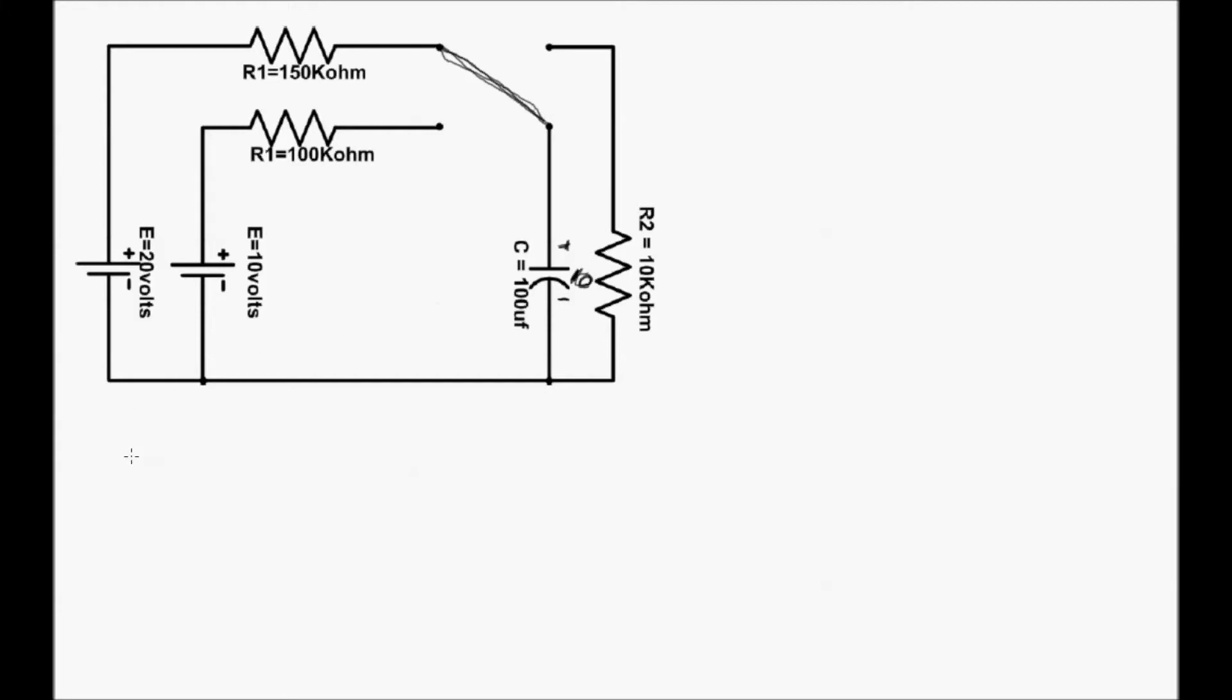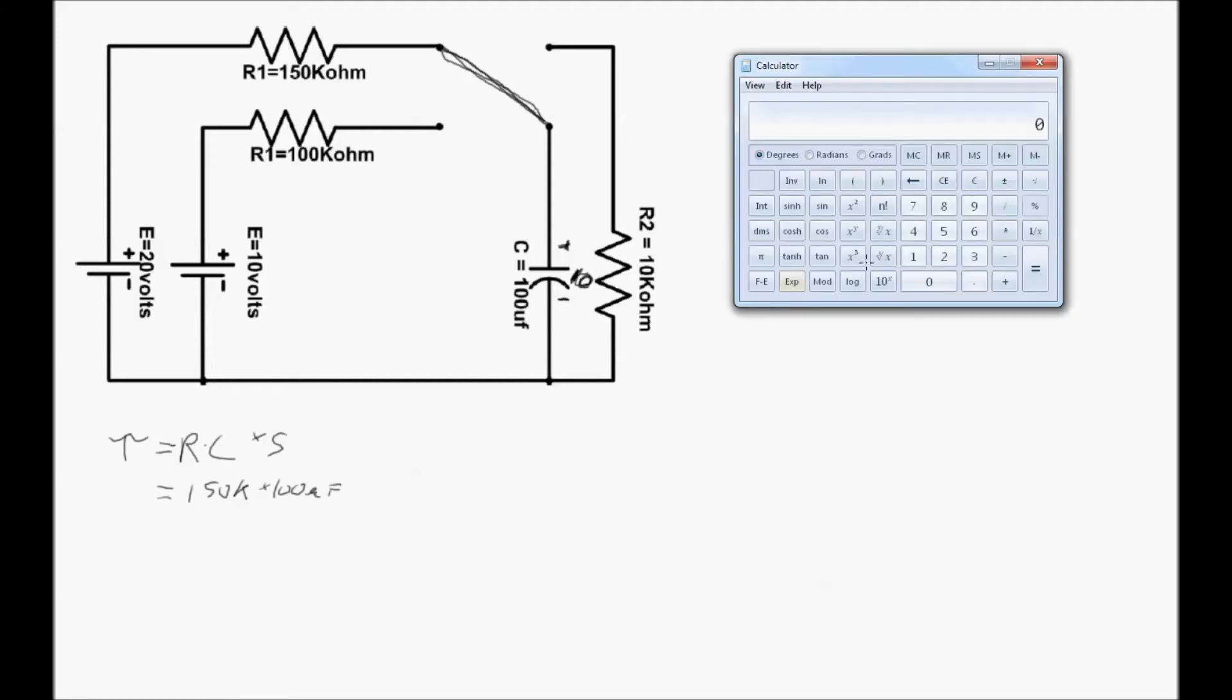So doing the steady state time constant calculation again, we have a new resistor of 150k times the same 100 microfarad capacitor. So let's just check it out, 150 exponent 3 multiplied by 100 exponent negative 6, that's the mu notation, that's 15 seconds.